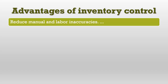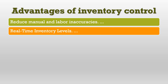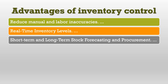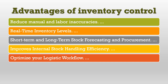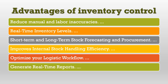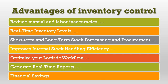Here are some advantages of inventory control. It reduces manual and labor inaccuracies. Real-time inventory levels are possible when you have optimum inventory. Short-term and long-term stock forecasting and procurement is possible because at any time point you can check your inventory — which item is going out of stock and which needs to be procured. It improves internal stock handling efficiency, optimizes your logistic workflow, generates real-time reports, and all these help save finances.